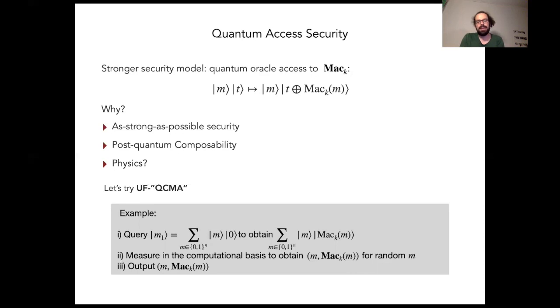Two thoughts about this. First of all, clearly this should not be counted as a break of the scheme because it's clearly possible for any MAC and it's in some sense just a quantum analog of the algorithm that samples a random message, queries it, and then outputs the resulting message tag pair. On the other hand, it turns out that the output is almost distinct from the query. It's almost orthogonal to the query. Therefore, somehow UFCMA doesn't seem to make sense anymore.